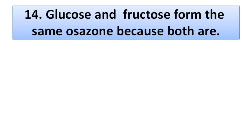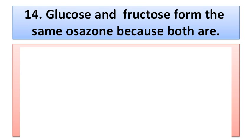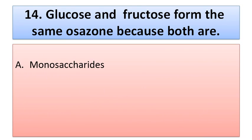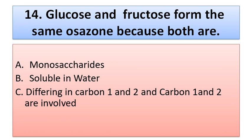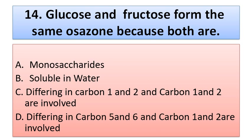Question number fourteen: glucose and fructose form the same osazone because both are — option A: monosaccharides, option B: soluble in water, option C: differing in carbon 1 and 2 (which is invalid), option D: differing in carbon 5 and 6 while carbon 1 and 2 are invalid. The correct option is option A, monosaccharides.